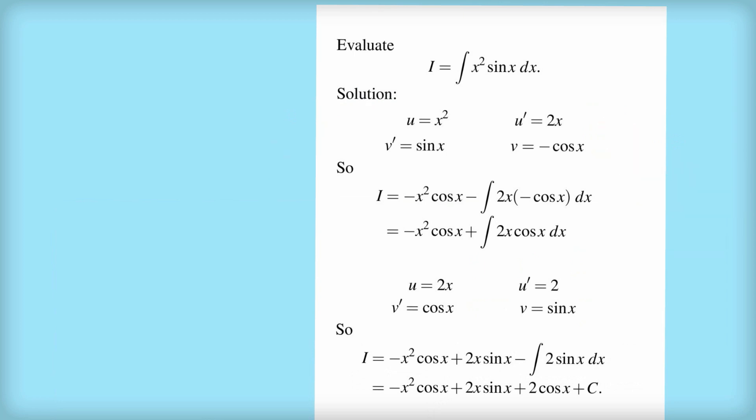So that gives us I, the integral that we're asked to evaluate. This bit here is u times v, and this bit in the integral is u dash times v. And don't forget the negative before the integral. So we clean that up a little bit, and that's what we get.